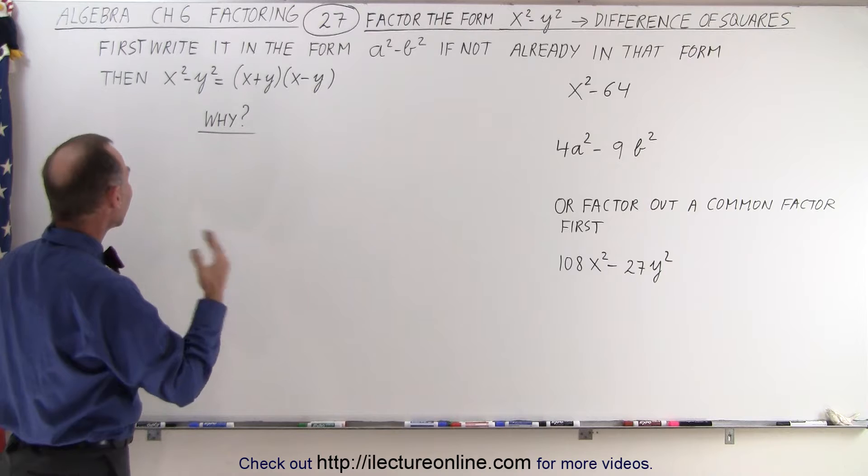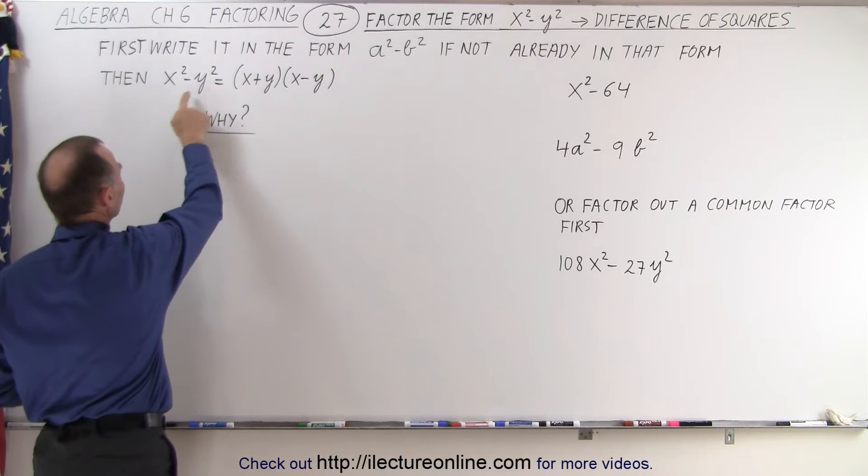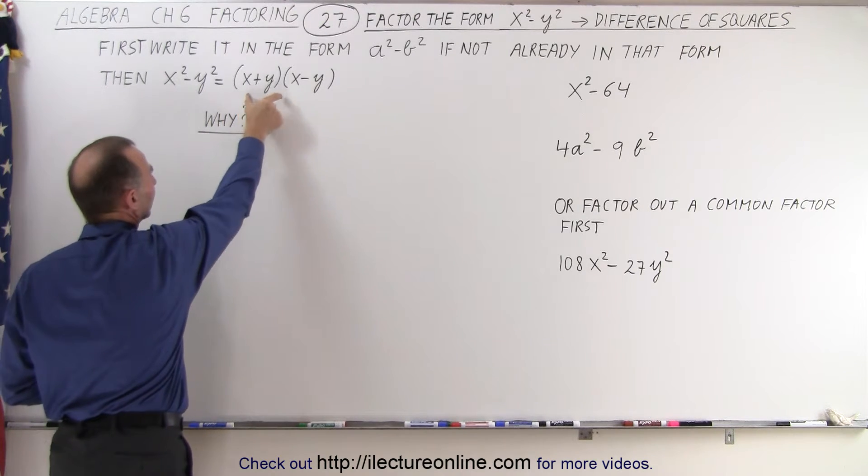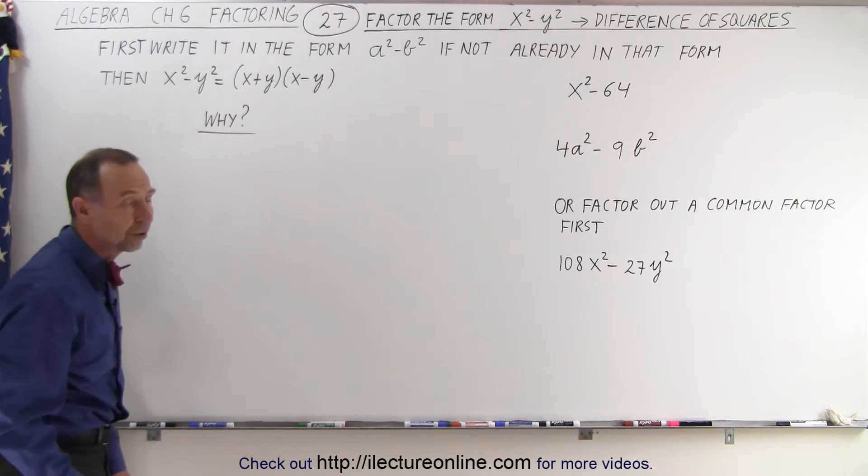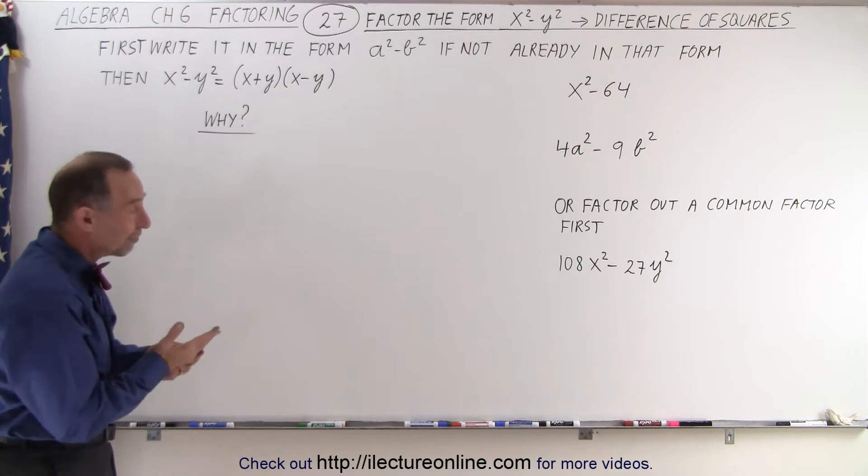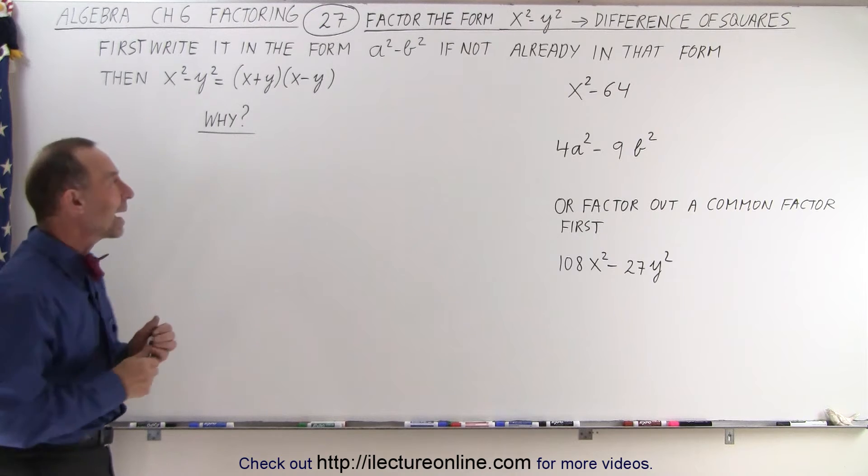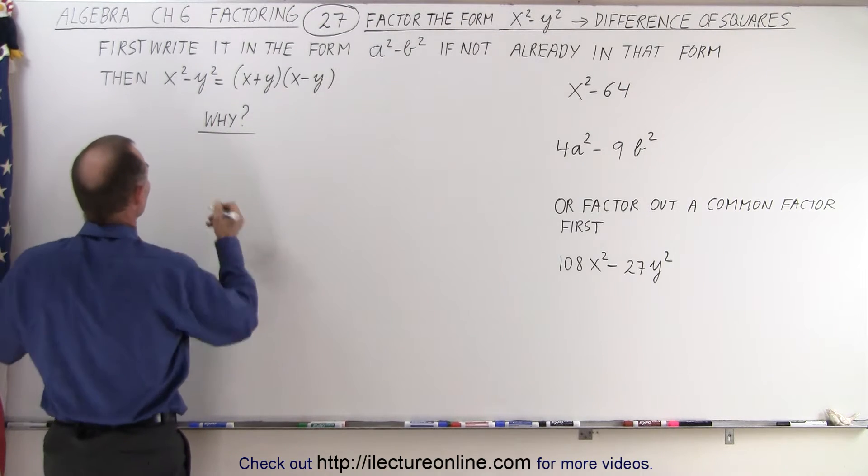But first of all, why is it that the difference of squares can be factored to be x plus y times x minus y, when this is the difference of the squares? Why is that? Well, the best way to find out is to multiply them back together to see what we get. So let's go ahead and do that.